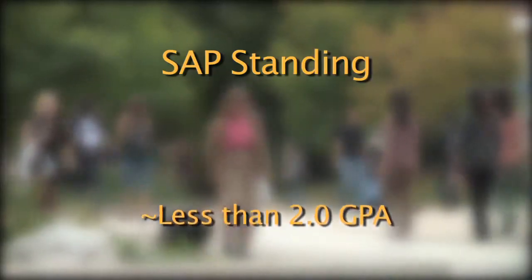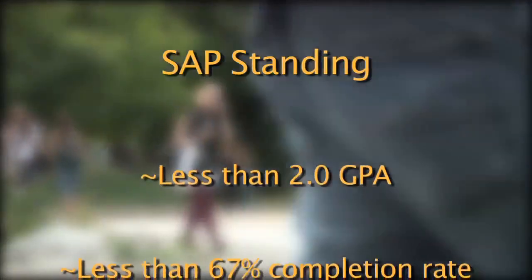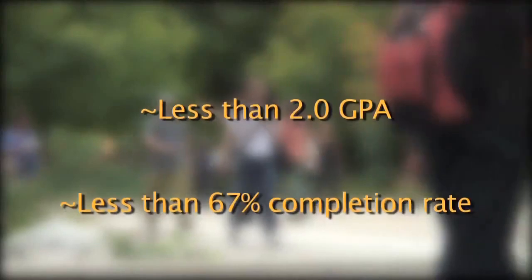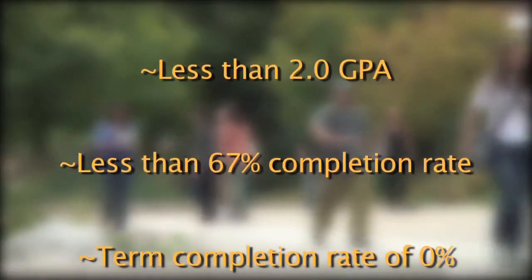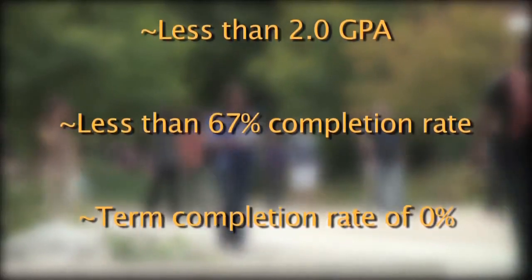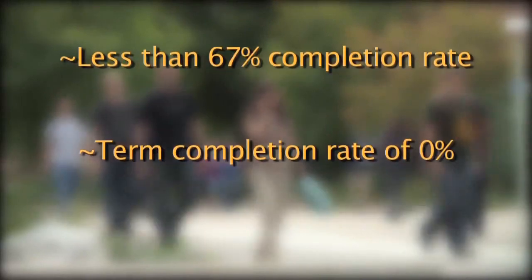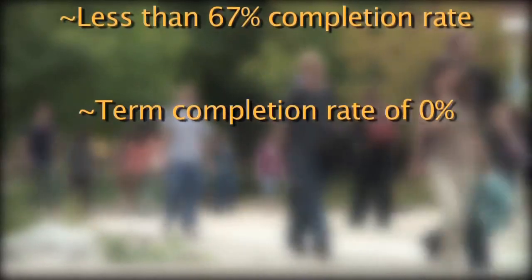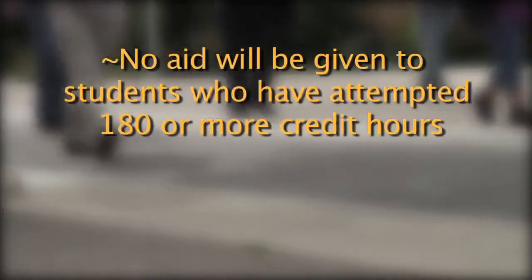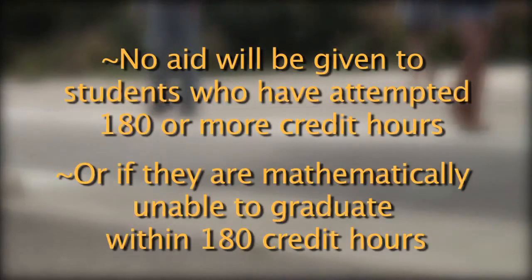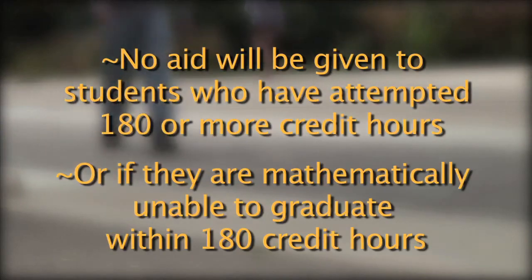SAP standing. You will be placed on SAP and will not be eligible to receive financial aid at Metro State for one or more of the following reasons: your cumulative GPA is below 2.0; you do not attain a 2.0 cumulative GPA after one semester on warning; you fail to complete at least two-thirds, or 67%, of the total number of credit hours you have attempted; or you complete 0% of the attempted credits during a semester. Students will not be offered financial aid if they have attempted 180 or more credits, or if they are mathematically unable to graduate within the 180 credit limit.